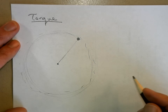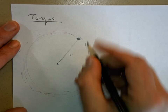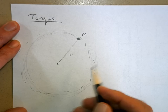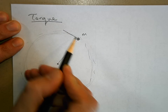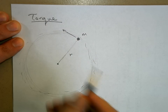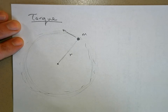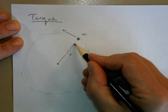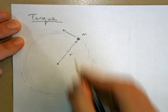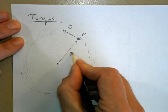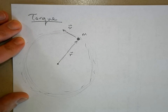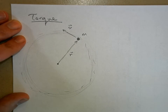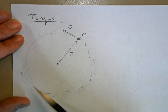It's an airplane or something tied to a string, so it's going to move in a circle. It's got an r, it's got m, and it does have velocity. Because it's tied to the string, the velocity is always perpendicular to the position vector r.